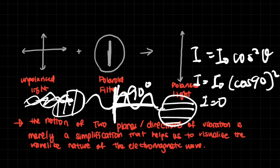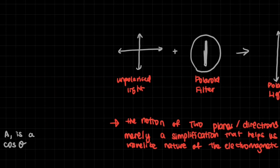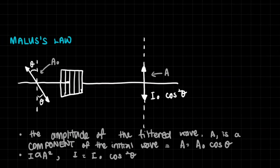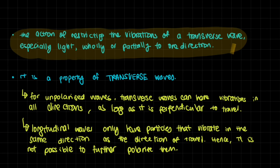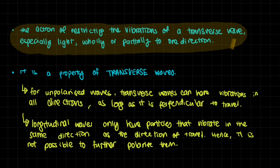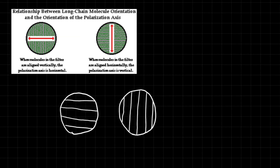That's about it for this video on polarization. The two biggest takeaways are Malus's Law and the fundamental knowledge that polarization only happens for transverse waves. Other things like how Polaroid filters work and what actually happens are also very interesting. I hope this was helpful, and for more videos on similar topics in A-level and AS-level physics, do check out the other videos on my channel. Thank you for watching.